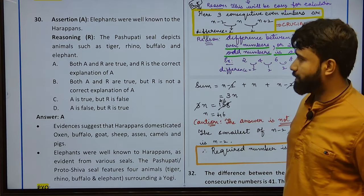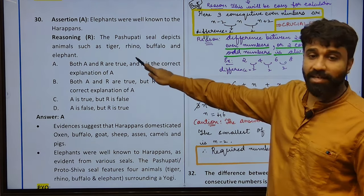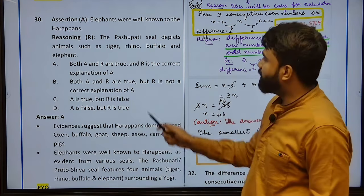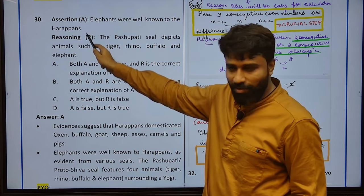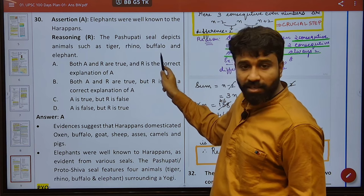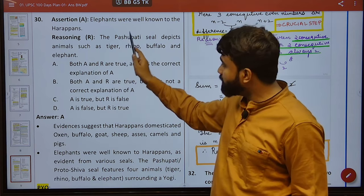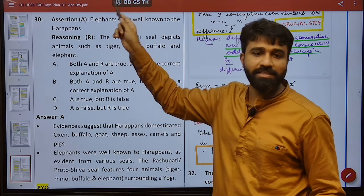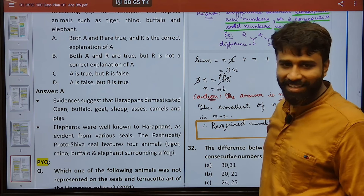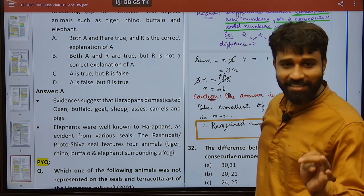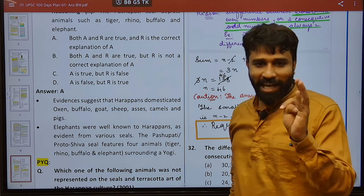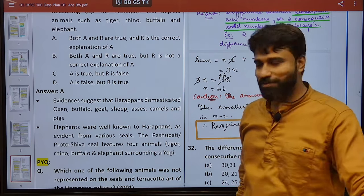Elephants were well known to the Harappans. The Pashupati seal depicts animals such as tiger, rhino, buffalo, and elephant. Evidence suggests Harappans domesticated oxen, buffalo, goat, sheep, asses, camels and pigs. Elephants were well known to Harappans as evident from various seals. Remember: Red TB — Rhino, Elephant, Deer, Tiger, Buffalo. Cow was not found in Harappan times — this was declared by UPSC in a 2001 PYQ. Cow was not found by Harappans.